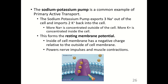The sodium-potassium pump is a common example of primary active transport. We have more sodium outside our cells and more potassium inside. The sodium-potassium pump exports three sodium ions out of the cell and imports two potassium ions back in, maintaining this concentration gradient. More sodium is concentrated outside and more potassium inside — this forms the resting membrane potential, where the interior of the cell membrane has a negative charge relative to the exterior. This is very important in powering nerve impulses and muscle contractions.